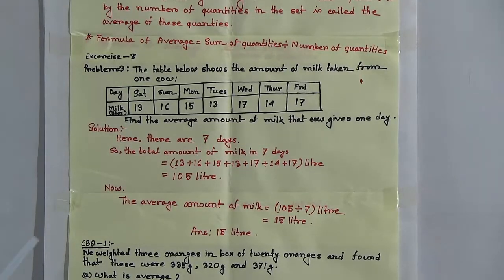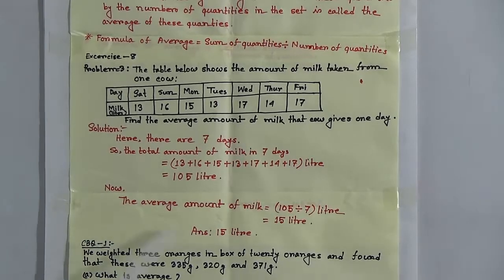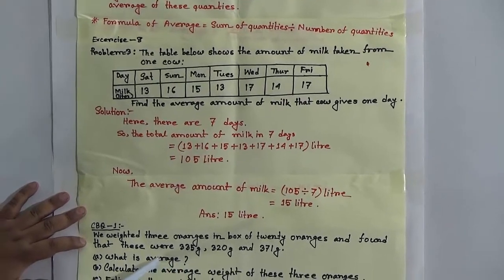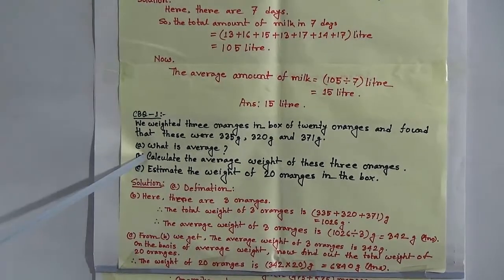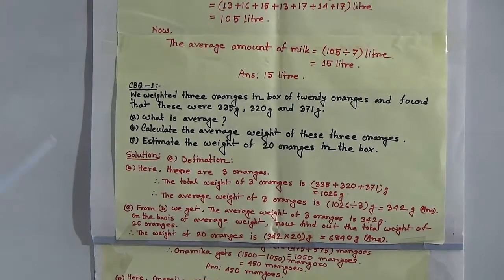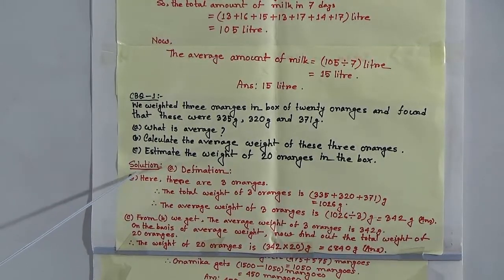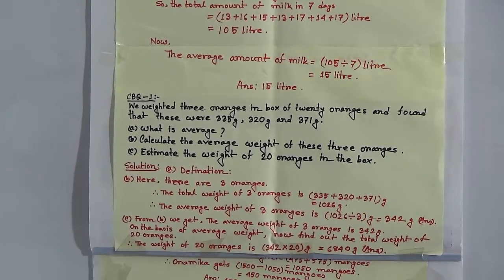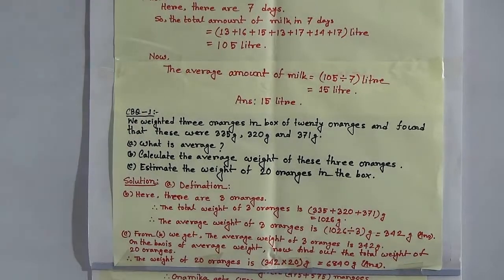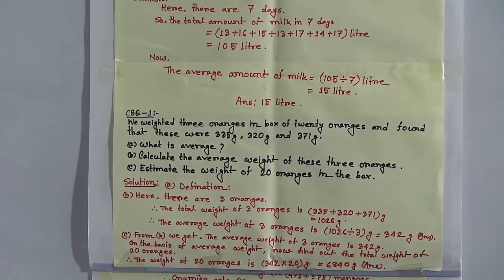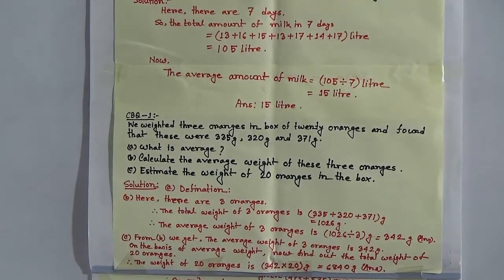CBQ: We weighed 3 oranges from a box of 20 oranges and found that these were 335 grams, 320 grams, and 371 grams. Question A: what is average? The definition of average is: when a set of quantities are given, the value obtained by dividing the sum of these quantities by the number of quantities in the set is called the average of these quantities.